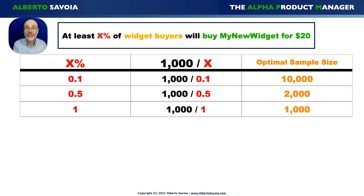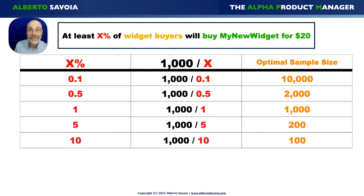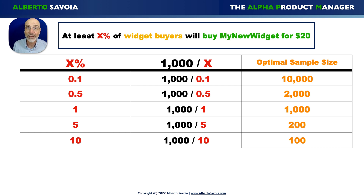As the X percent increases, the sample size you need decreases. At the 10% category, your sample size is 1,000 divided by 10, which is 100. So if you expect 1 in every 10 people to buy your widget, you can ask 100 people, and if your hypothesis holds, you'll have about 10 buyers, give or take a couple.